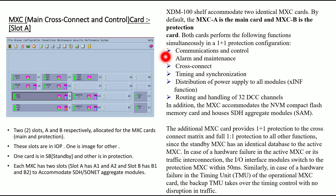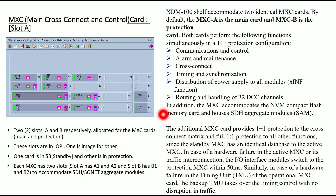The MXC card performs the following functions: communication control, alarm and maintenance, cross-connect, timing and synchronization, distribution of power supply to all modules, and routing and handling of 32 DCC channels. In addition, the MXC accommodates the NVM compact flash memory card and houses the SDH aggregate module SAM card.